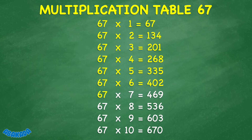67 times 7 equals 469. 67 times 8 equals 536. 67 times 9 equals 603.